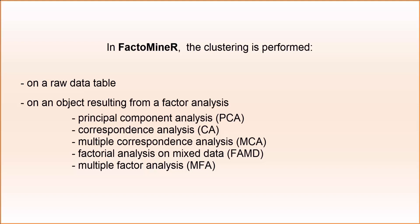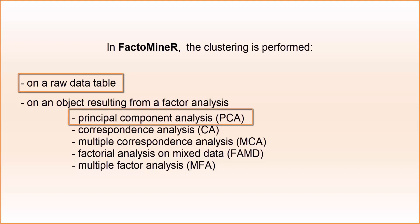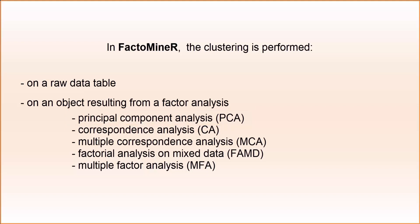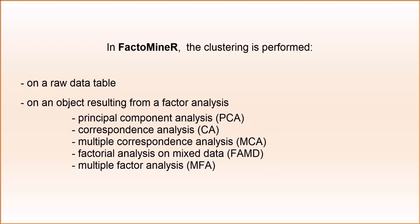When you have a dataset with quantitative variables, you can either perform the clustering directly on the data, or perform a PCA beforehand and use the PCA coordinates of the individuals to perform the clustering, keeping only the first dimensions of the PCA. When the values are qualitative, mixed, or when it is a contingency table, a MCA, a factorial analysis on mixed data, or a correspondence analysis will be used. Then the clustering will be carried out from the FactorShiny menu of the principal component method after exiting it.